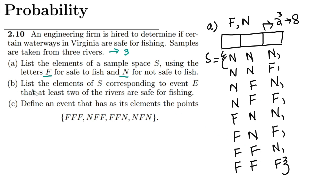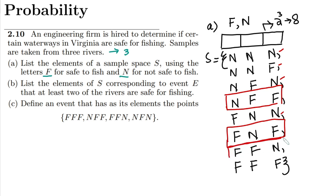In part B, we are asked to list the elements of S corresponding to event E. Event E is the subset of S where at least two of the rivers are safe for fishing. We have to select items where two F's are present. Here we can see no river is safe, one river is safe, two rivers are safe — at least two means two or more.